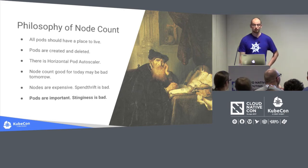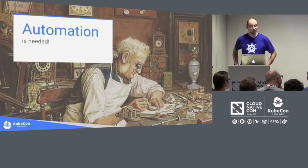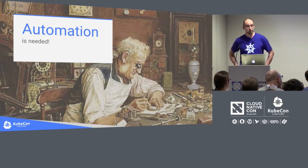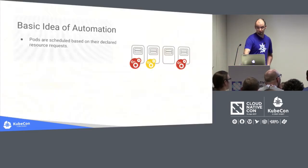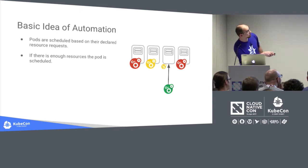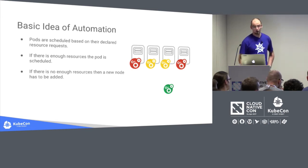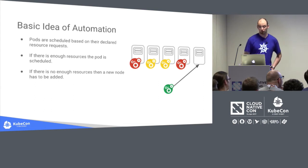Nodes are expensive — you pay for them on your cloud provider, so being wasteful is bad. On the other hand, pods are important — they run your business, so being stingy is also bad. To handle this problem at scale, proper automation is needed. Simplifying a bit: pods are scheduled based on their declared resource requests. If there is enough resources on a node, a pod can be scheduled there. However, if all nodes are busy, we don't have a place for the new pod, so a new node should be provisioned.